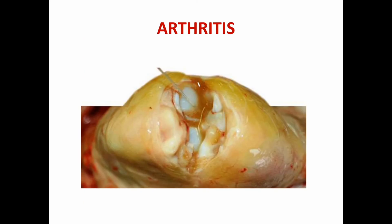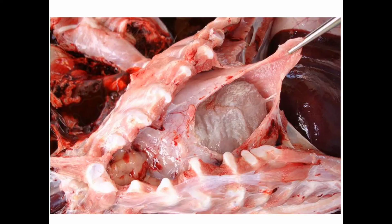Next one is arthritis. And then fibrinous pleuropneumonia. This picture shows fibrinous pleuropneumonia — you can see the thickened pleura here.